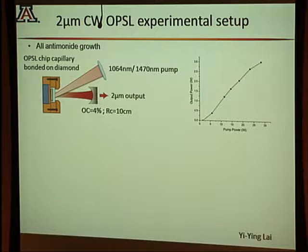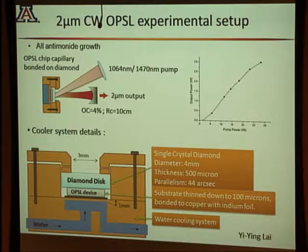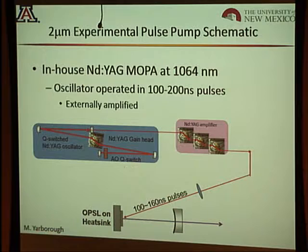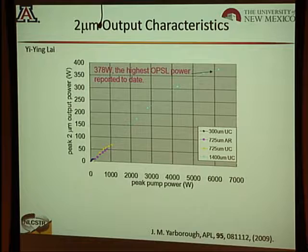For the 2-micron device, the top-emitter structure on gallium antimonide requires a diamond on top — worked on by Yi-Ying along with Mike and others. We achieved 3 watts CW, matching the best results from gallium antimonide material systems. Pulse pumping with a YAG oscillator-amplifier chain gave 100–160 ns pulses, with peak power progressing from 8 watts to 70 watts to 400 watts over about three years — a record peak power for 2-micron devices. The device had the IMF lattice-mismatched growth layer.